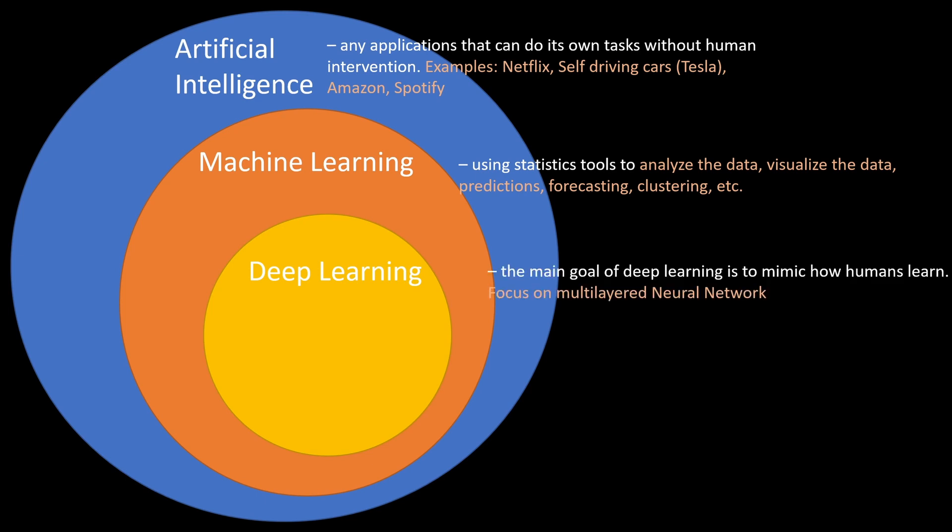And in simple terms, the main goal of deep learning is to mimic how humans learn, right? But it's not exactly how humans learn, right? For example,